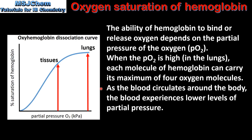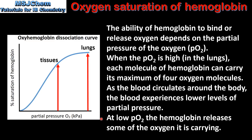As the blood circulates around the body, the blood experiences lower levels of partial pressure. At low partial pressures of oxygen, the haemoglobin releases some of the oxygen it is carrying. So at high partial pressure, such as in the lungs, the haemoglobin is saturated with oxygen. At lower partial pressures, such as in the tissues, the saturation of the haemoglobin decreases, because the haemoglobin has released some of the oxygen it was carrying due to the lower partial pressure.